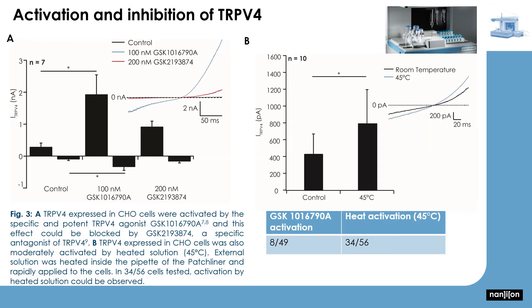In the next set of experiments, the Patch Liner was used to record TRPV4. The Patch Liner is a fully automated patch clamp system for recording up to eight cells simultaneously. TRPV4 was activated by the ligand GSK1016790A, a potent and specific activator of TRPV4, and blocked by GSK2193874, a specific blocker of TRPV4.